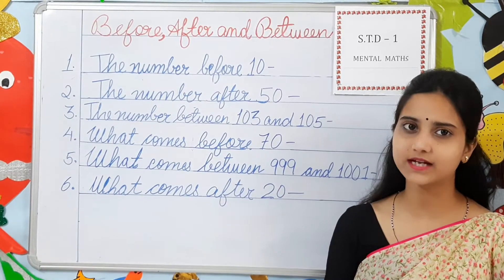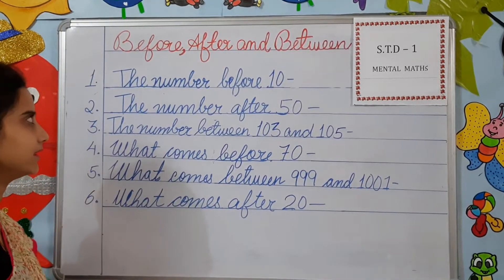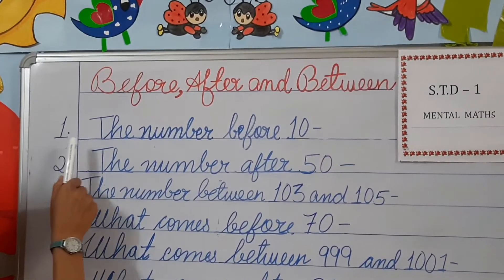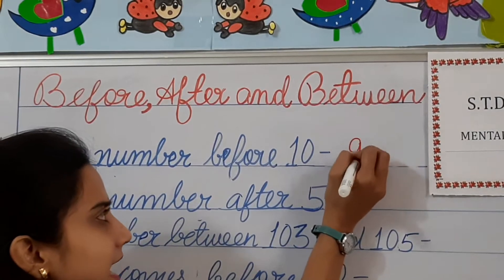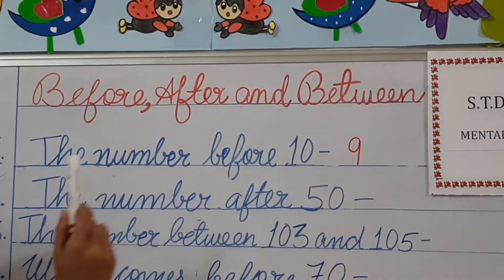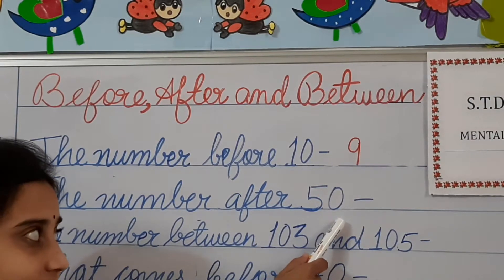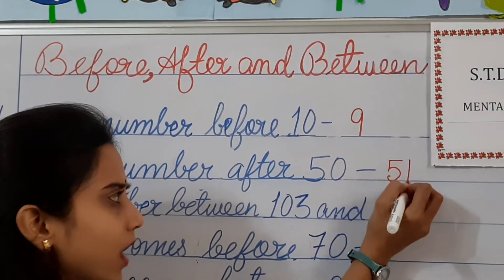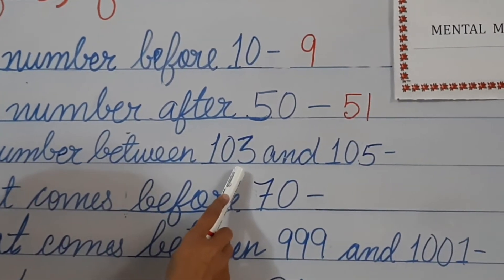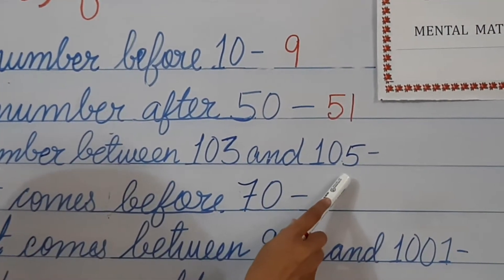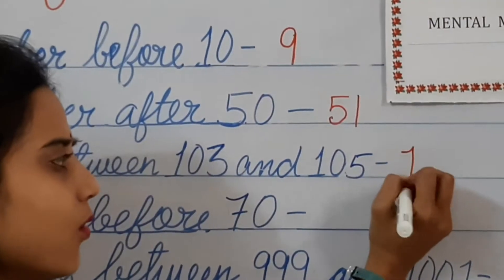So today we are going to study before, after and between. Look here children. Question number 1: the number before 10, that means number 9 comes before 10. Next, the number after 50 — that means what comes after 50? 51, very good. Next question: the number between 103 and 105, that means the number which comes in between, that is 104.